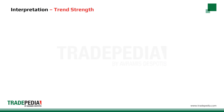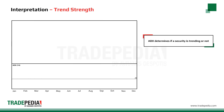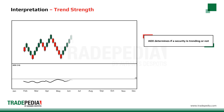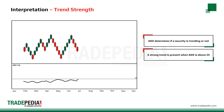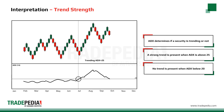The Average Directional Index can be used to determine if a security is trending or not. Wilder suggests that a strong trend is present when ADX is above 25. No trend is present when ADX is below 20. There appears to be a gray zone between 20 and 25, so traders could use a lower level than 25 to increase the sensitivity of the method.